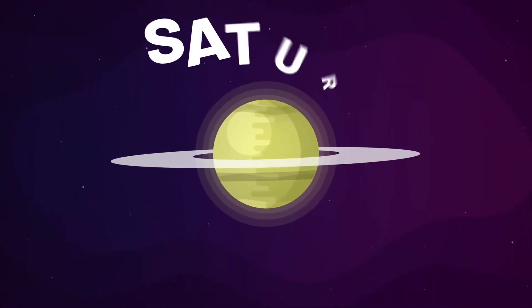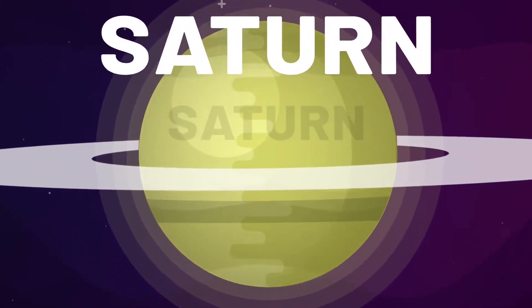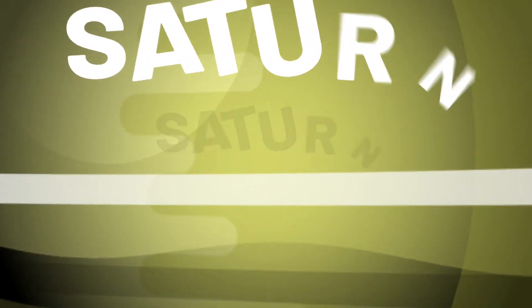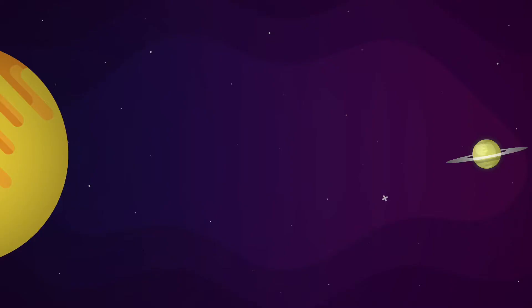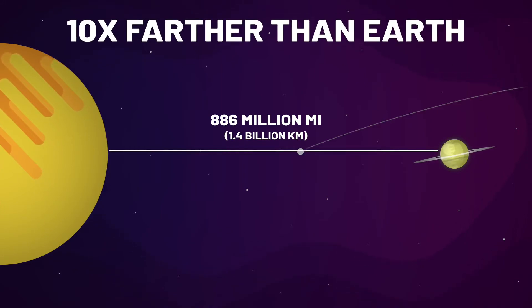Well into the outer solar system, beyond mighty Jupiter, lies the sixth planet from the sun, Saturn. At an average distance of nearly 900 million miles from the sun, Saturn is almost 10 times farther away than Earth.